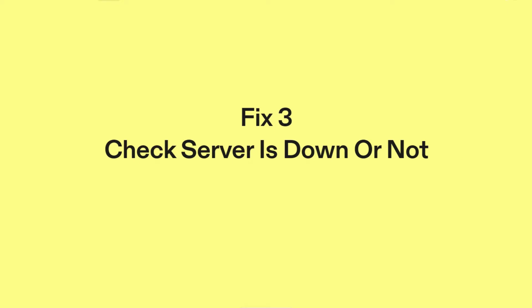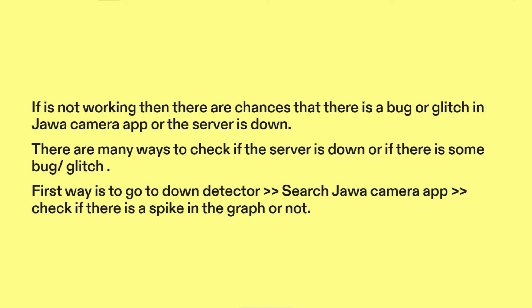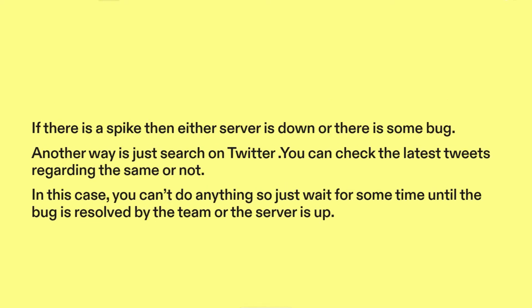Fix three: check if the server is down or not. If it's not working, then there are chances that there is a bug or glitch in Jawa camera app or the server is down. There are many ways to check this. First, go to Down Detector, search Jawa camera app, and check if there is a spike in the graph. If there is a spike, then either the server is down or there is some bug. Another way is to search on Twitter and check the latest tweets regarding the issue.